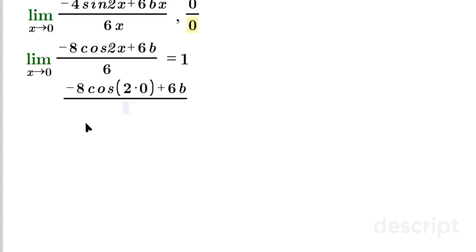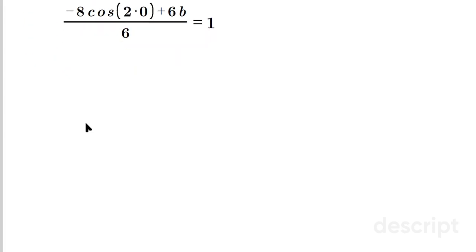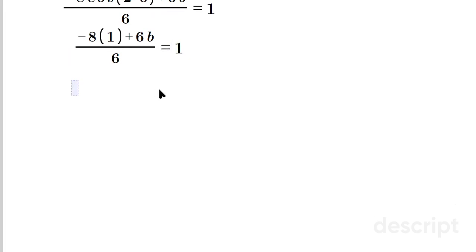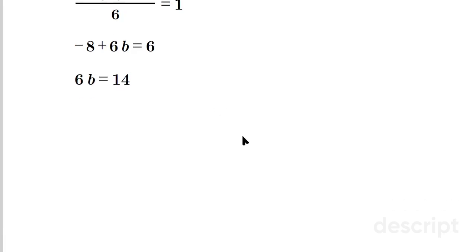Now you can solve this for b directly. Negative 8 times cosine of 2 times 0, which is cosine of 0 which is 1, plus 6b over 6 equals 1. So negative 8 plus 6b equals 1 times 6 which is 6. Add 8 to both sides, so 6b equals 14. Divide by 6 on both sides, you have 14 over 6, divide 2 away so it's 7 over 3, and that's the value of b.